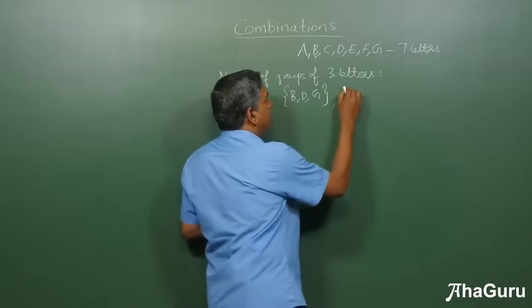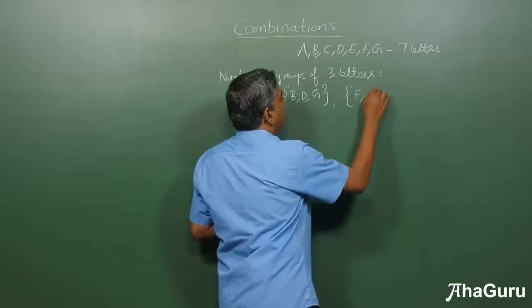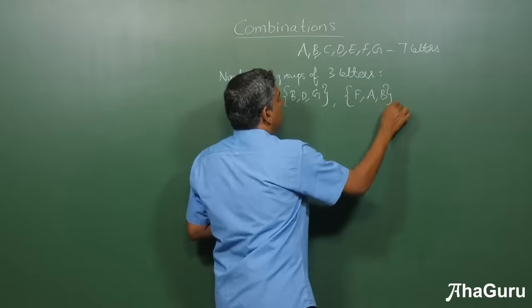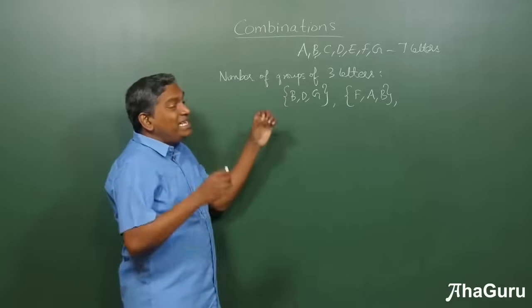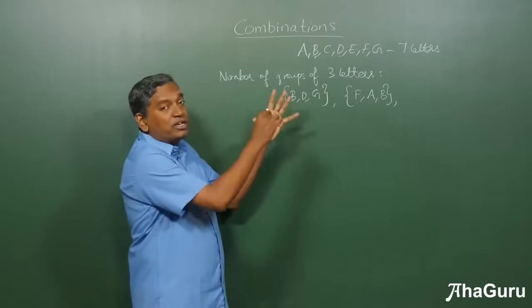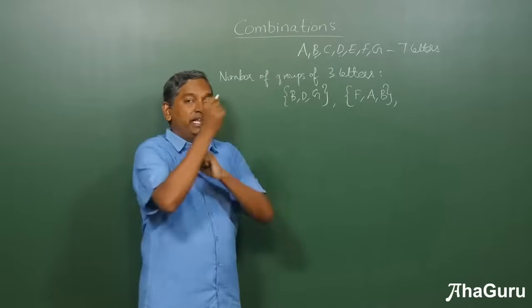I can have another group. Let's say F, A, D. Like this, we can have many, many groups. Now, how many such groups are there? That is what we are concerned about in combinations.